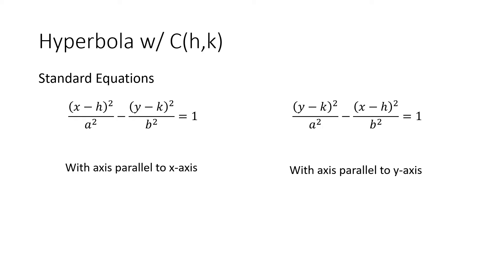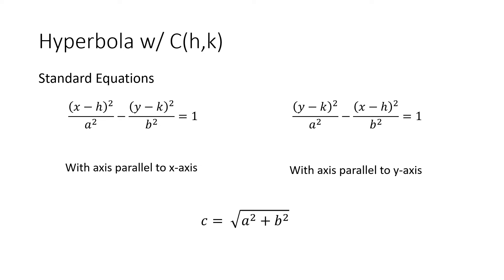Here, a is the distance from our center to our vertex — one of the vertices — and c is the distance from our center to our focus. Since our center is at (h, k), the change in coordinates will simply be plus or minus a to get the coordinates of our vertices, and plus or minus c to get the coordinates of our foci.